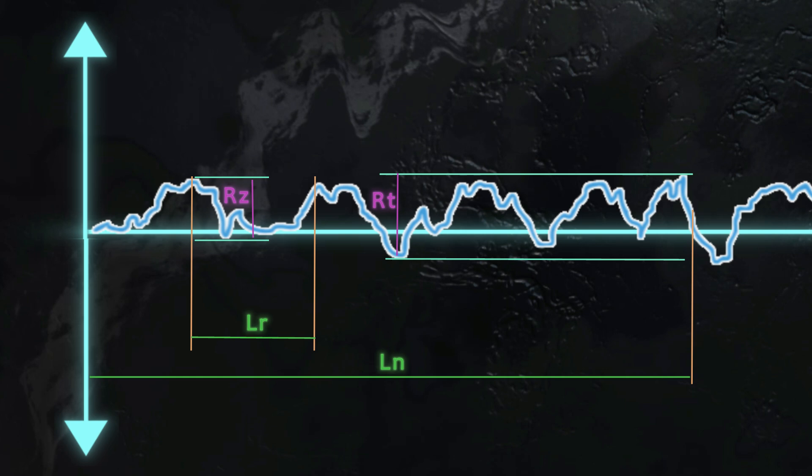Rr is the arithmetic mean of the heights of the peaks and the depths of the valleys inside a single Lr. So, you sum up the depths of the valleys and the heights of the peaks, ignoring the direction, and you take the arithmetic mean of that value.